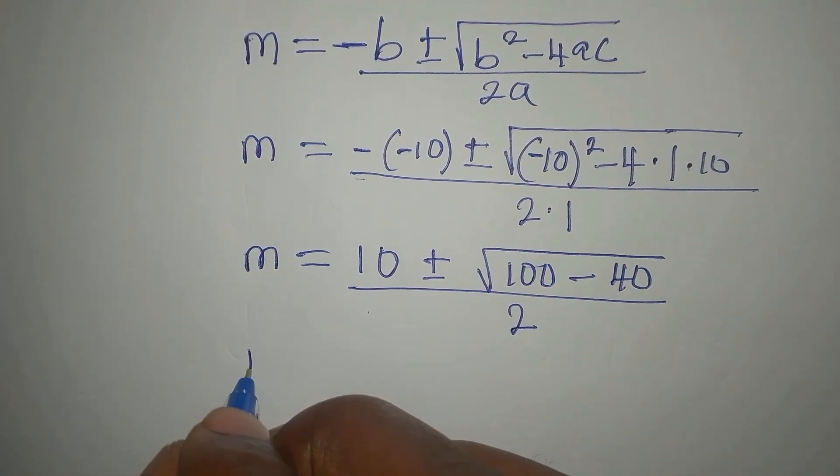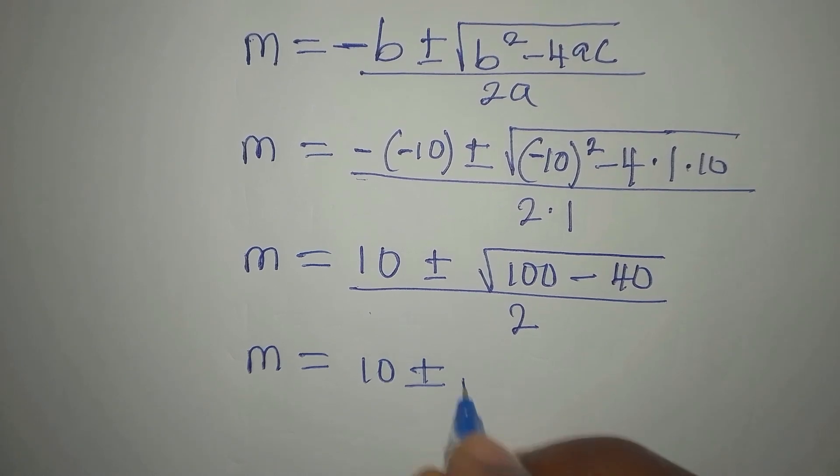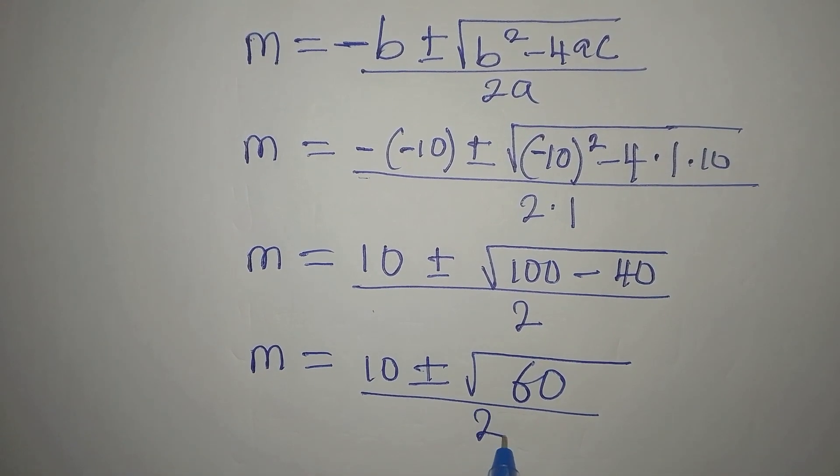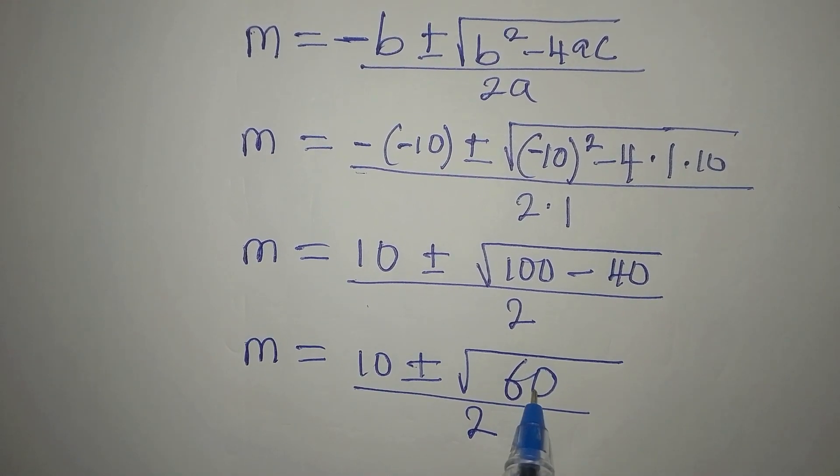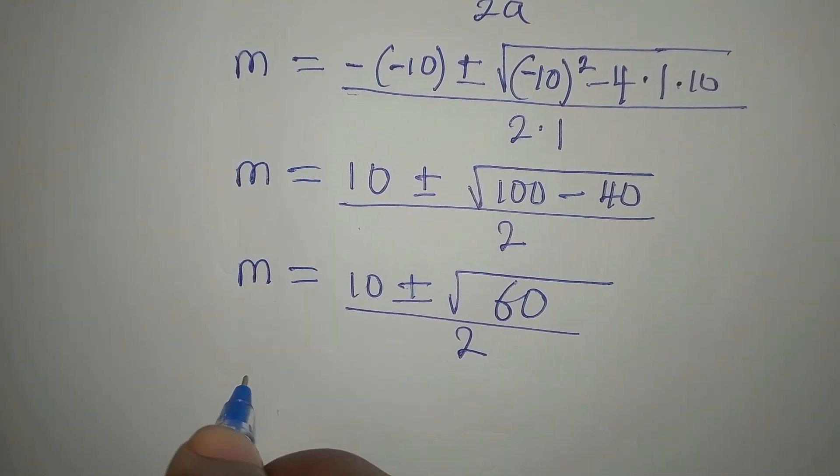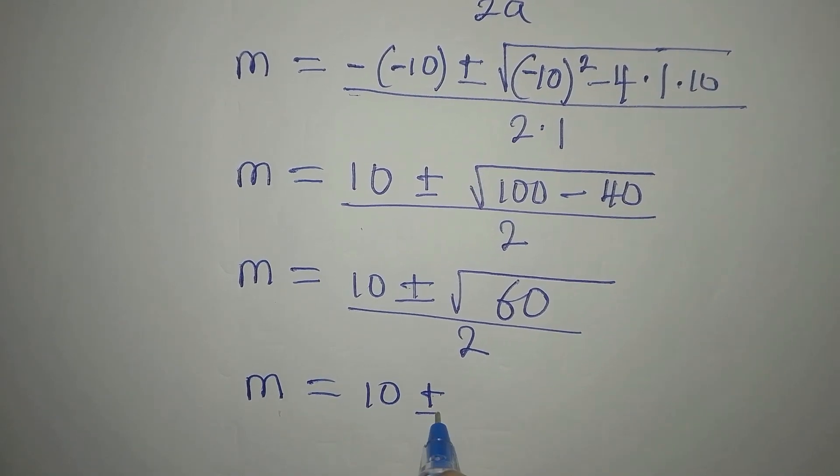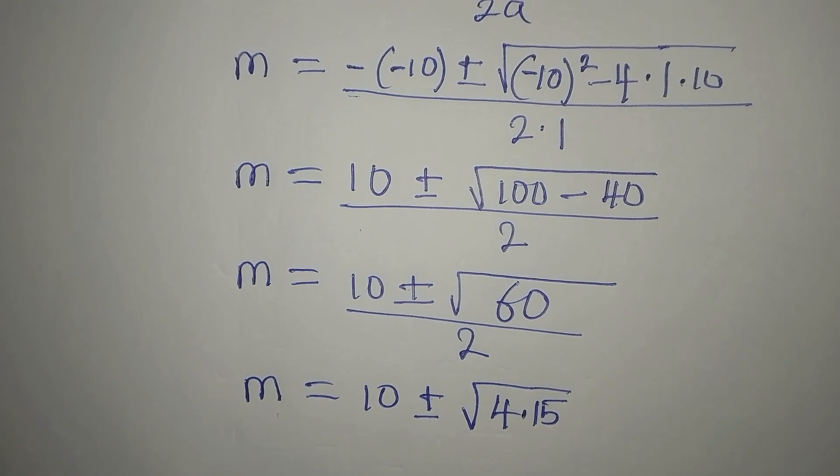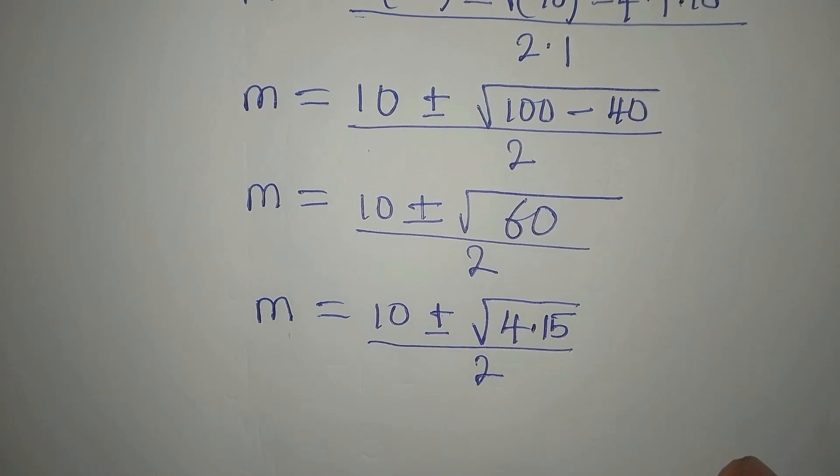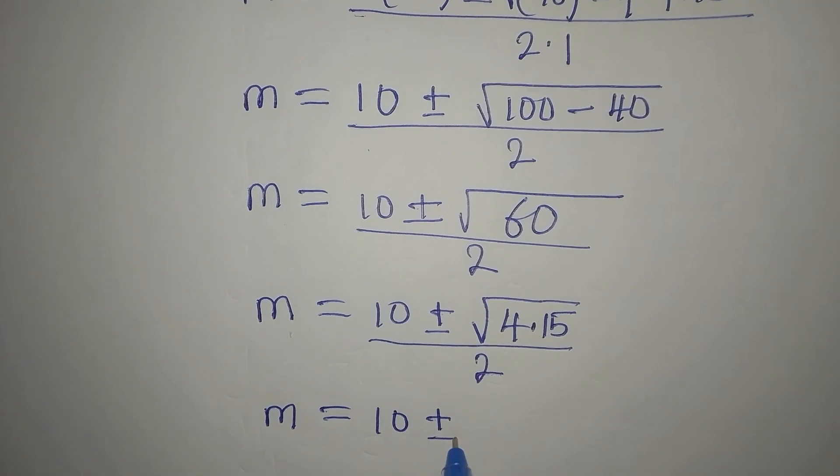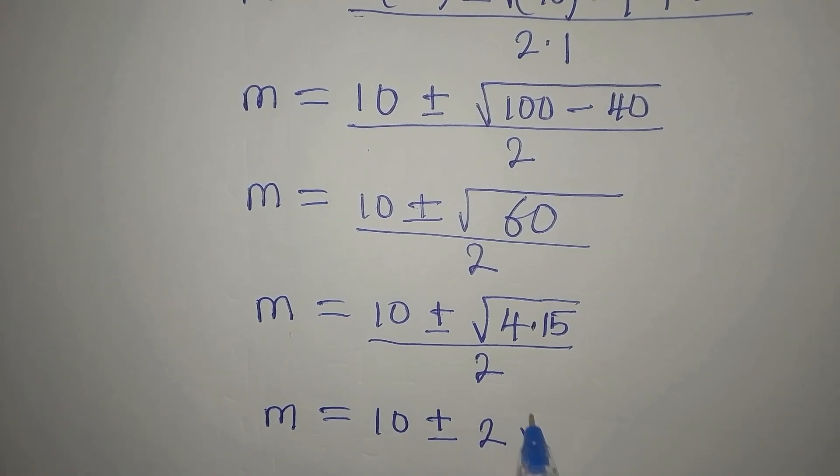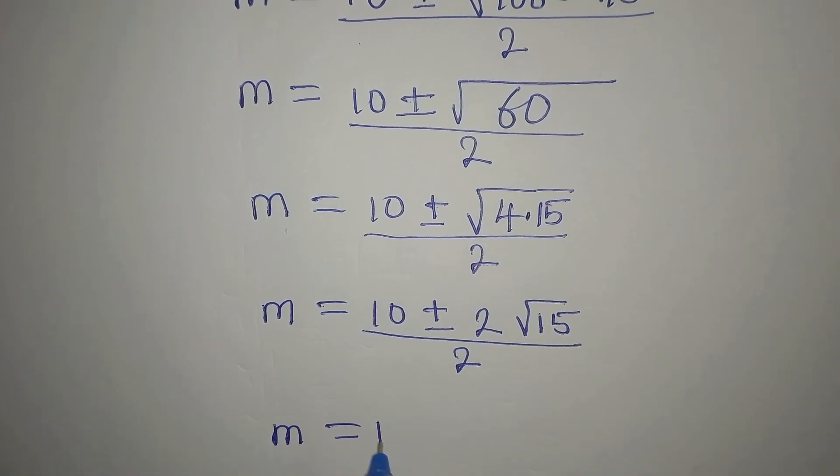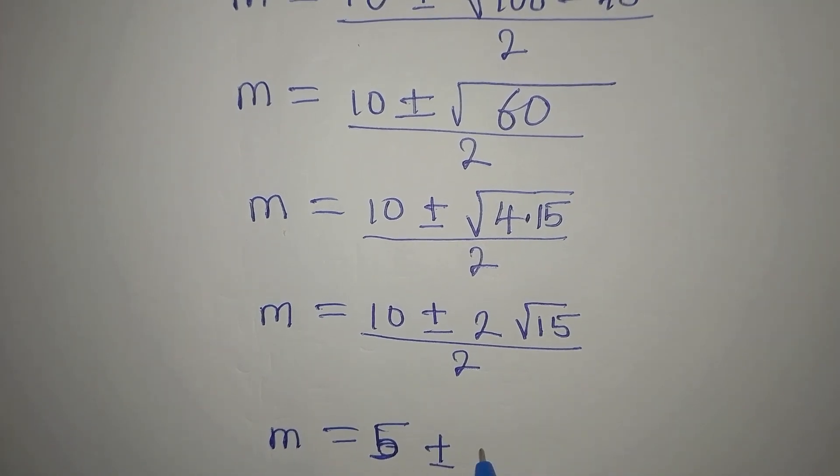To continue with this, our m will now be 10 plus or minus square root of 100 minus 40 is 60. Then we divide by 2. Our next target is to see if 60 can be simplified. So m will now be 10 plus or minus square root of 4 times 15. That is 60. Then we divide by 2. Our m will be 10 plus or minus square root of 4, and root of 4 is 2, then root 15. Remember, all of this is over 2. To go ahead with this, our m will be 5, this is 5 plus or minus square root of 15.